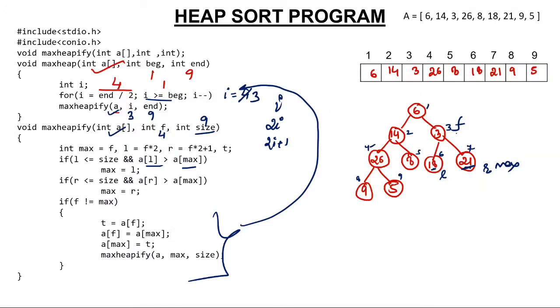Is F and max not equal? Yes, F and max are not equal because F is at index 3, max is at index 7. They are not equal. Exchange it. This is what's swapping. On exchanging, 21 will come here and 3 will come here.